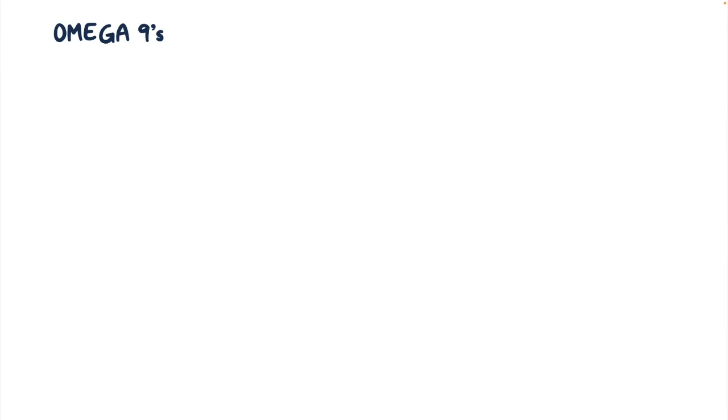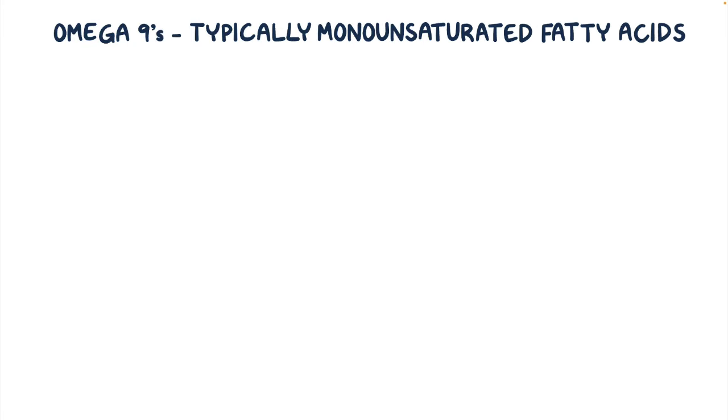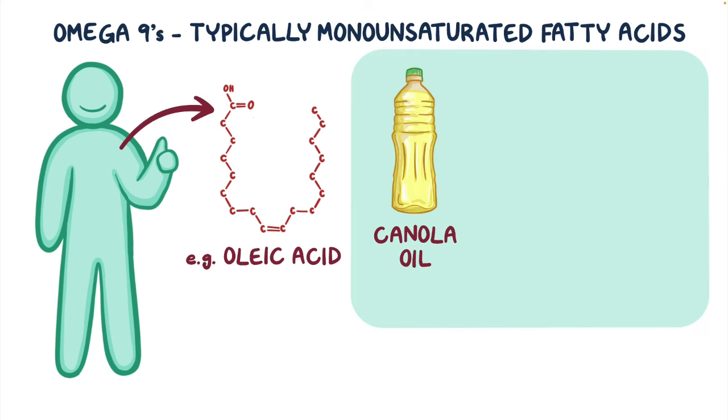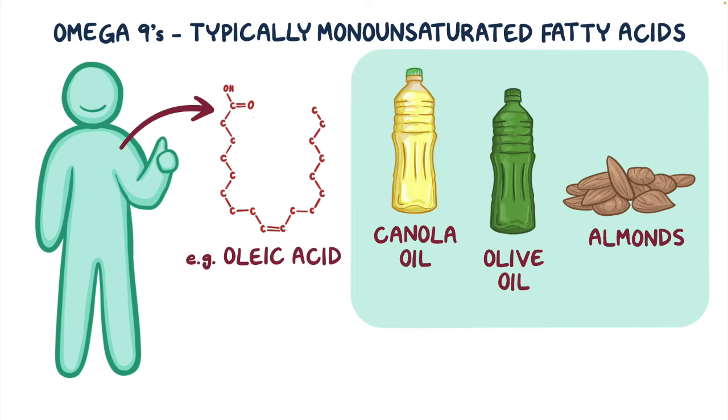Omega-9 fatty acids are typically monounsaturated fatty acids, and an example would be oleic acid, and these can be made by the human body. Foods like canola and olive oil as well as almonds contain omega-9s.